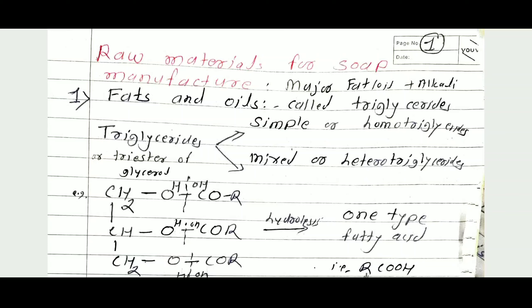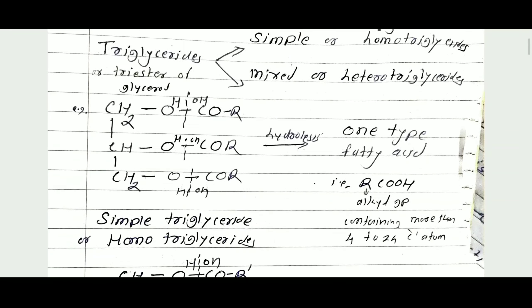Simple or homo triglyceride means on hydrolysis it gives only one type of fatty acid. Hydrolysis is nothing but the addition of a water molecule. Simple triglyceride on hydrolysis gives only one type of fatty acid. The general formula is RCOOH, where R is the alkyl group containing more than 4 to 24 carbon atoms. Glycerol reacts with higher fatty acid to form one type of fatty acid — simple triglyceride, also called homo triglyceride. Homo means same, that is only one type of fatty acid is formed on hydrolysis.